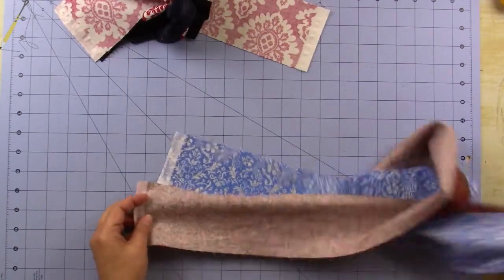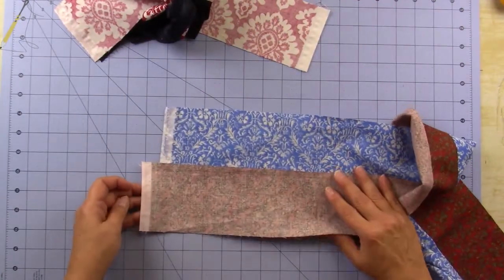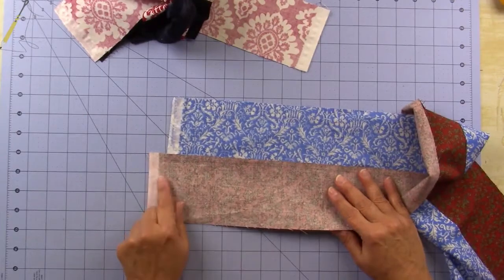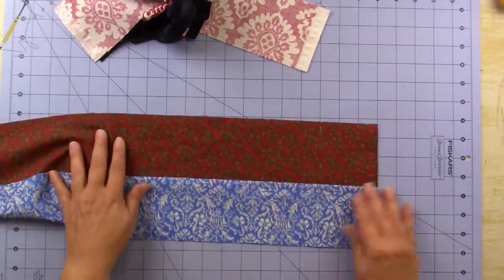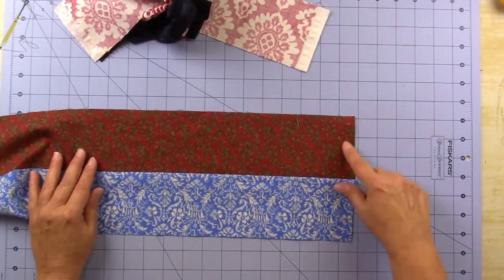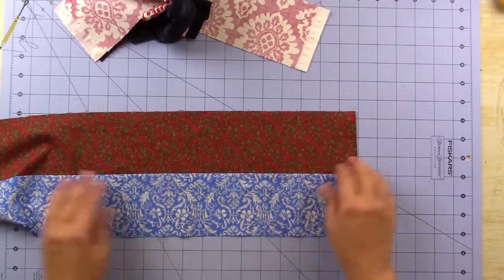This is another example of a piece that has been sewn already, and this is how different the lengths are. Here's the other side. So I like to match up one side of the selvage.